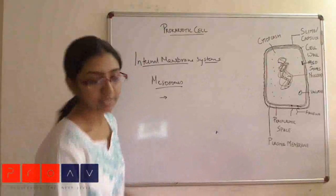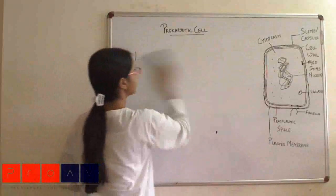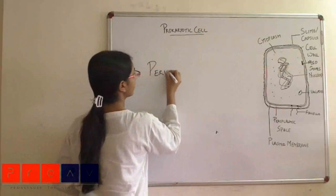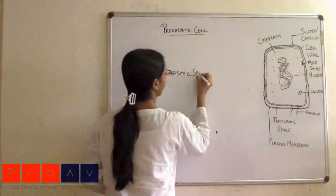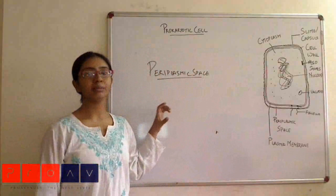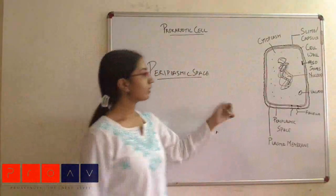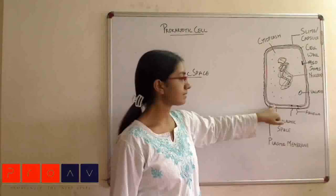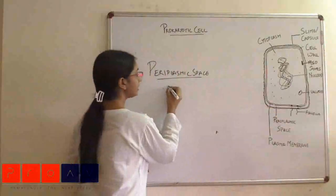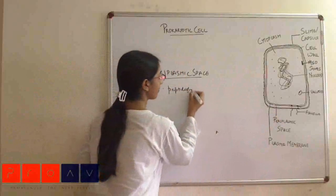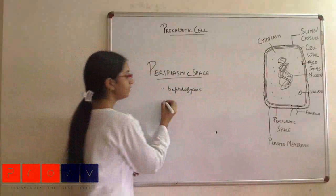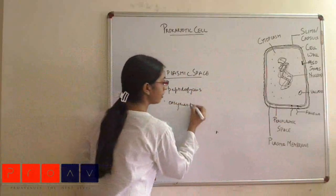Apart from internal membranous systems, we also have the periplasmic space. The width of the periplasmic space differs greatly between gram-positive and gram-negative bacteria. The periplasmic space is the space between the plasma membrane and the cell body. Its basic functions include containing peptidoglycans that eventually form the cell wall, and since it has peptidoglycans, it definitely contains enzymes for peptidoglycan synthesis.